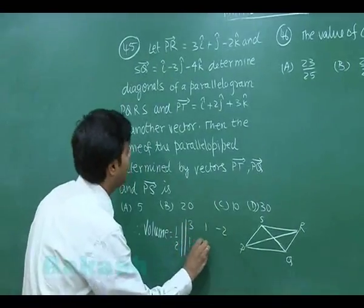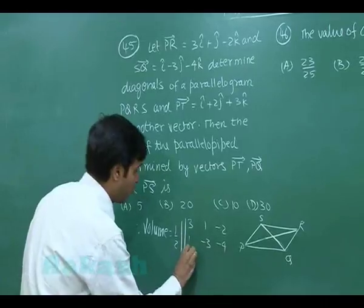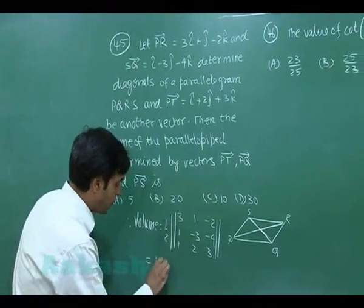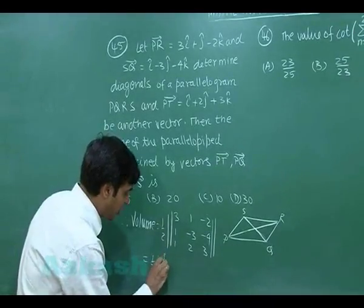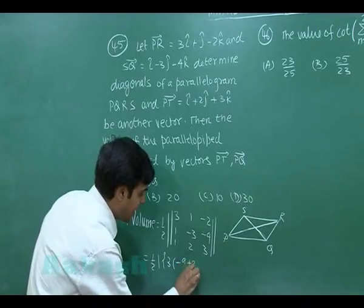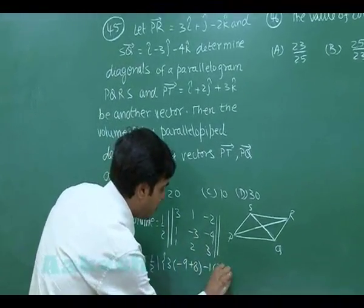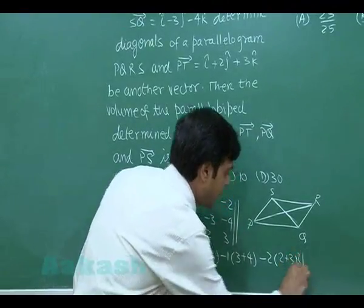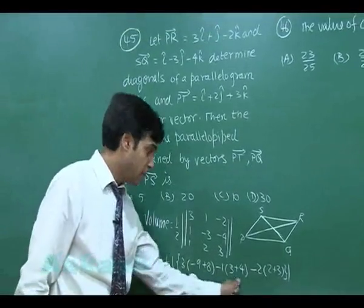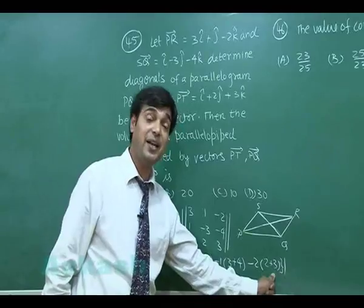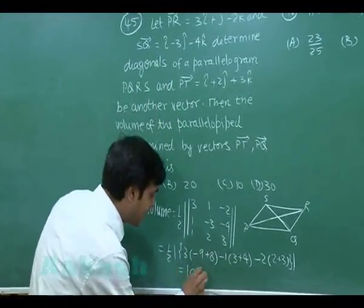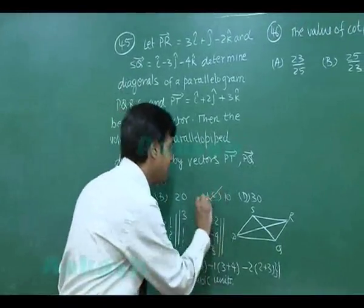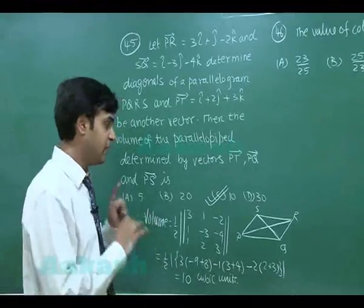Setting up the determinant with rows [3, 1, −2], [1, −3, −4], [1, 2, 3] and taking half the modulus: 3(−9+8) − 1(3+4) − 2(2+3) = 3(−1) − 7 − 10 = −3 − 7 − 10 = −20. Half the modulus gives 10 cubic units. The correct answer is option C: 10 cubic units.